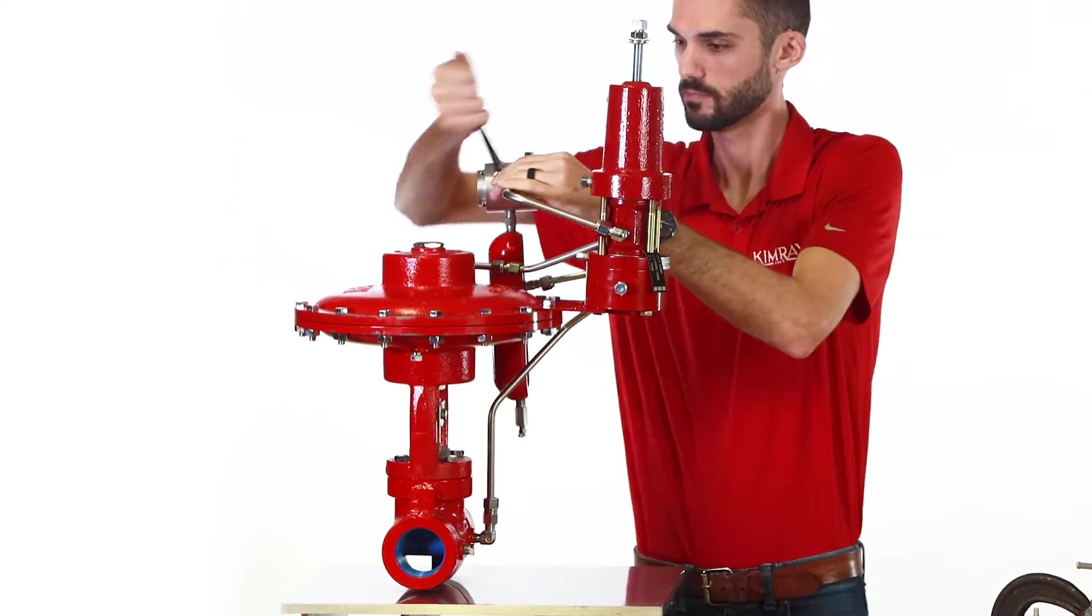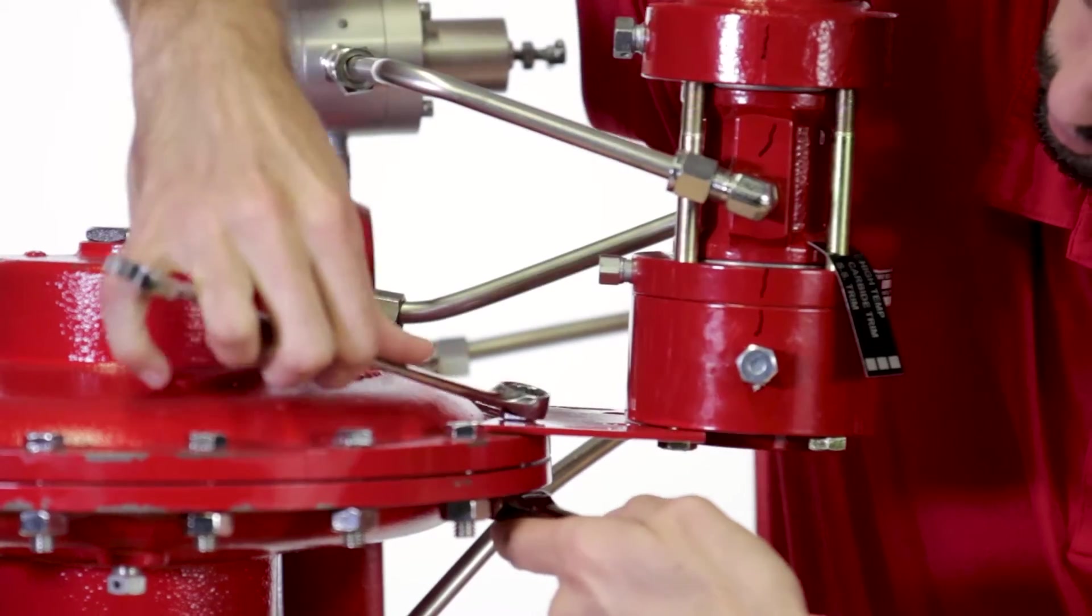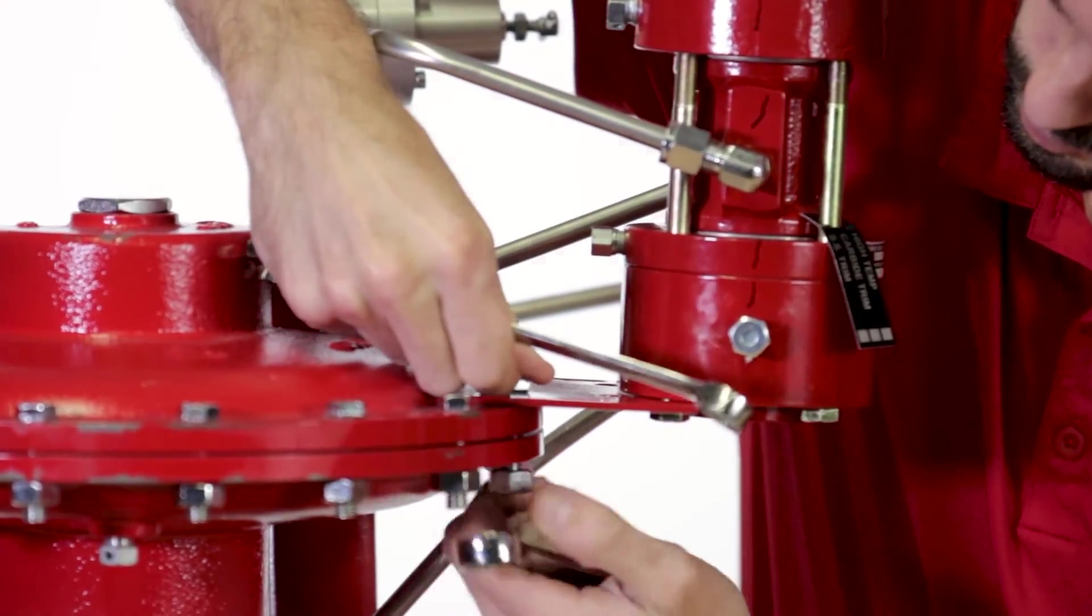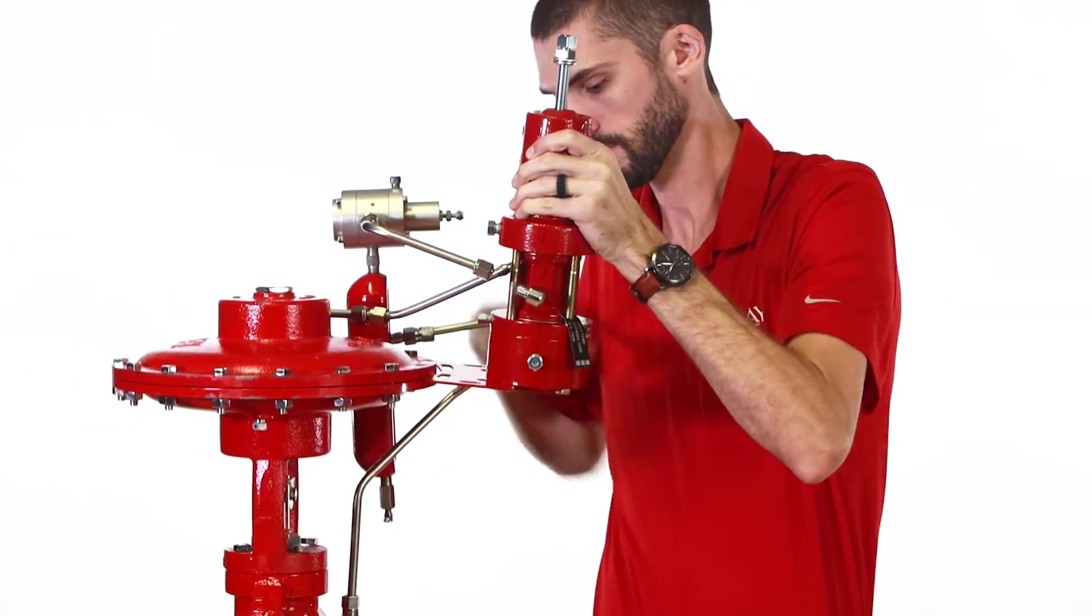With the valve package isolated from all gas sources, disconnect the tubing. Using a 9/16ths and 11/16ths wrench, remove the bracket bolts and separate the pilot and bracket from the high pressure control valve package.